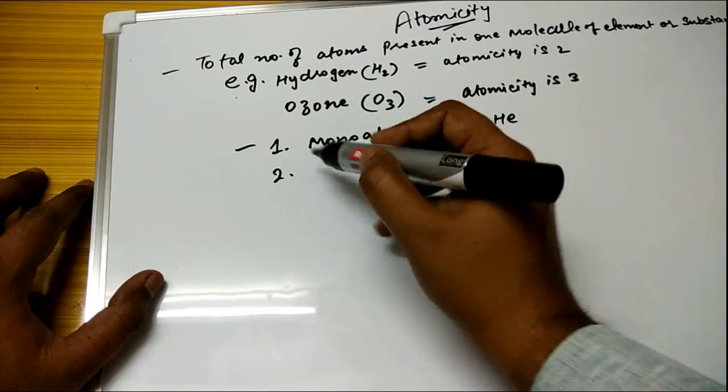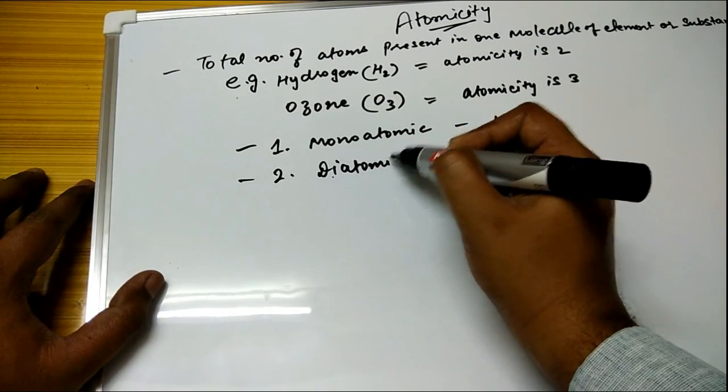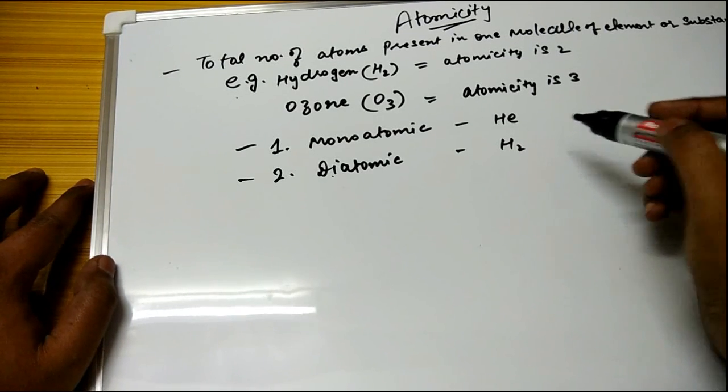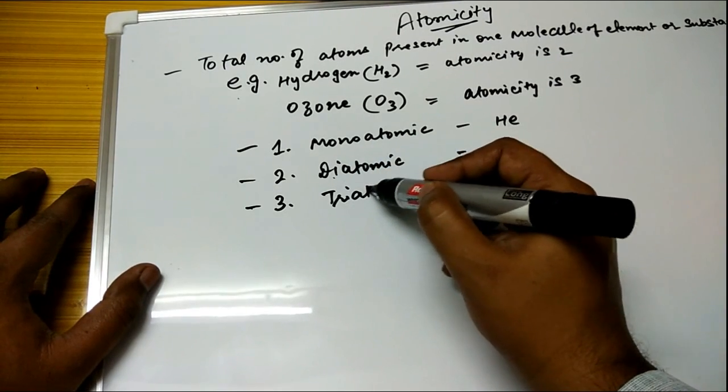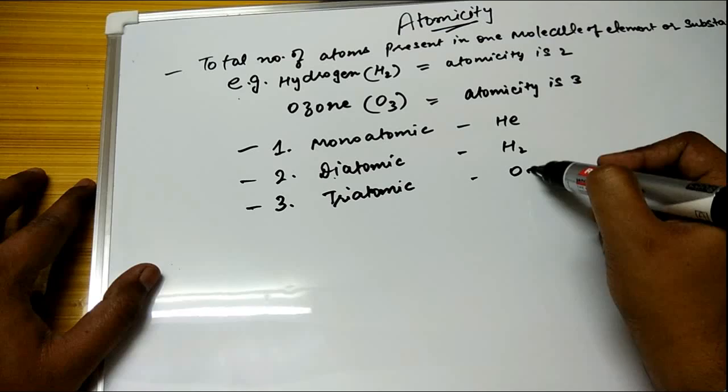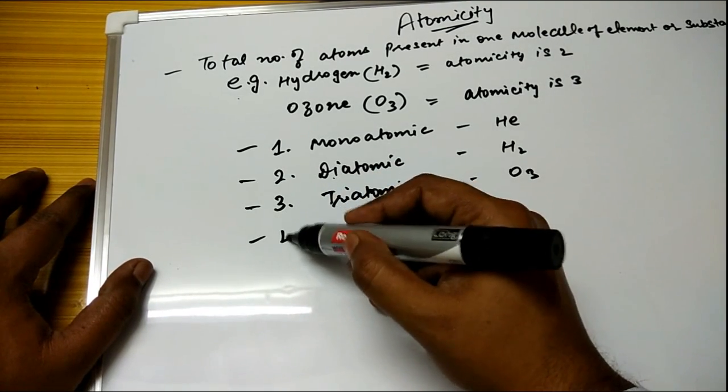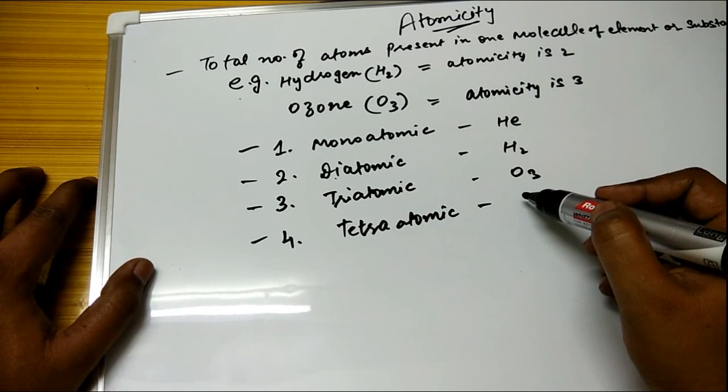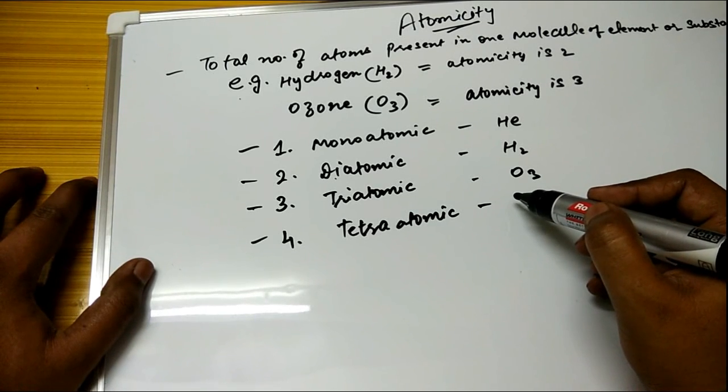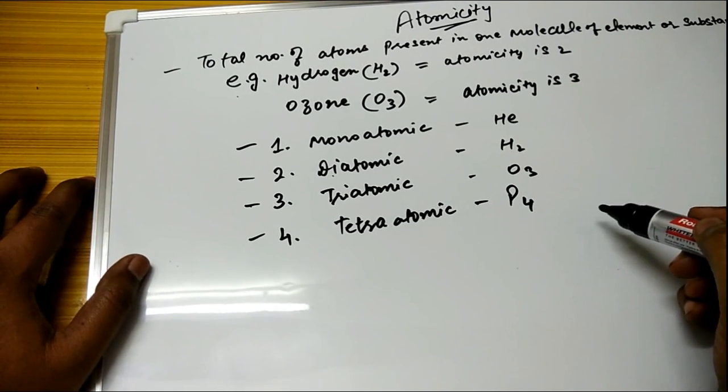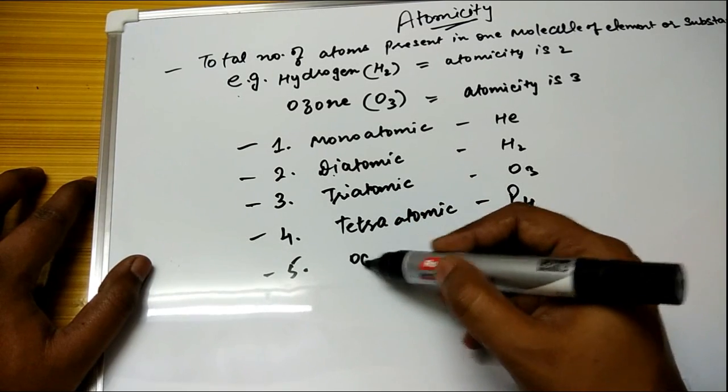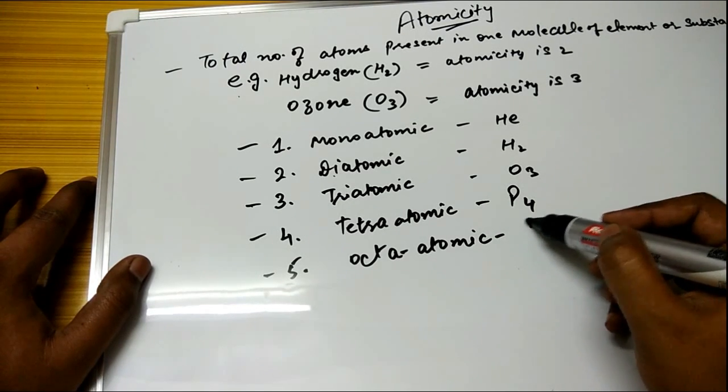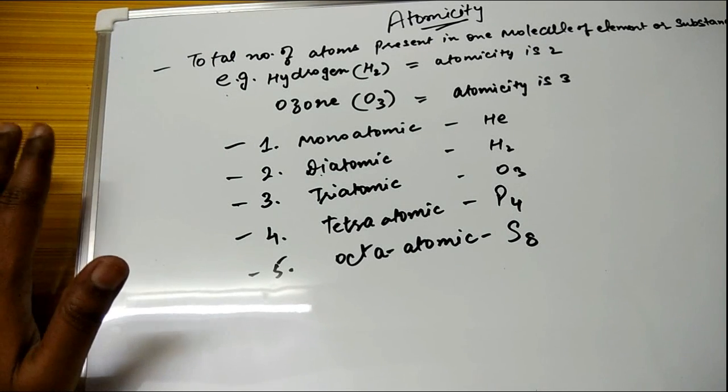Second is diatomic, like I have given H2 above. Third is triatomic like O3. Number four is tetra-atomic like P4 phosphorus. Next is octa-atomic like S8 sulfur. So in this manner you can ascertain very easily what is the actual atomicity of an element or a substance.